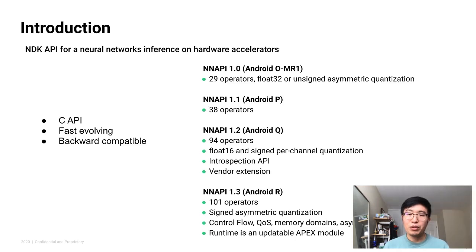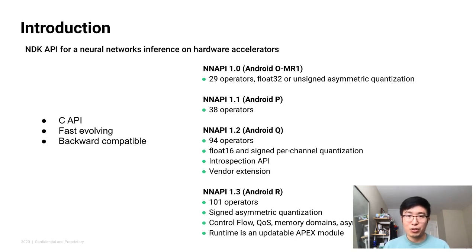With the soon-to-be-released Android R, we added more operators and started supporting signed asymmetric quantization. There are also advanced features like control flow, quality of service, memory domain, and asynchronous command queue. We also made the NNAPI runtime an updateable APEX module, which means we are able to update the runtime much faster than the normal Android update schedule.